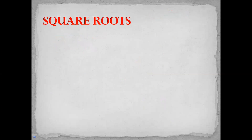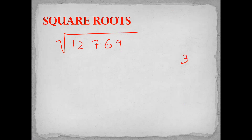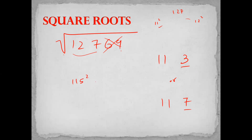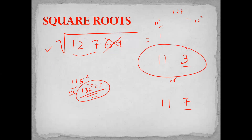Let's take one more example: square root of 12769. So 9 — the square of which numbers ends in 9? It is either 3 or 7, so our answer should end in either 3 or 7. Step two, cover two digits — I'll take 127. 127 lies between 11² and 12², right? It is clearly less than 12², so I'll take the lower one: 11. My answer has to be 113 or 117. We will check 115²: 5²=25 and 11 into 12 which is 132, so 115²=13225. Now 13225 is greater than 12769, so the answer should be less than 115. Less than 115 is 113. Our answer is 113. Done.